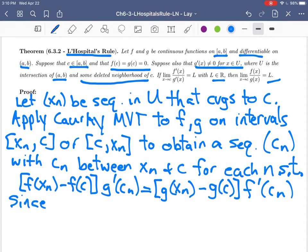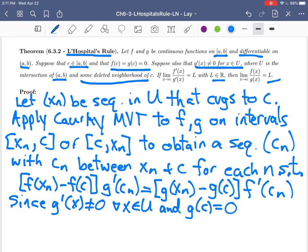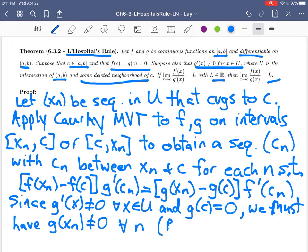Since we know that g'(x) is not zero, since g'(x) is not zero for every single choice of x in U, and g(c) is actually equal to zero, we must have g(x_n) is not equal to zero for all n. And this comes from Rolle's theorem.